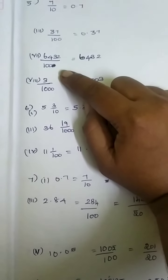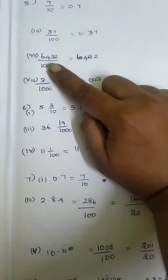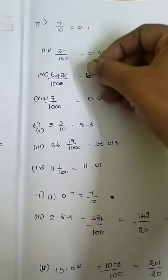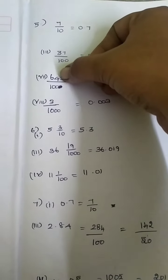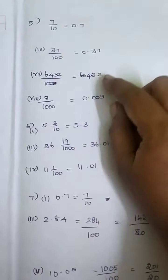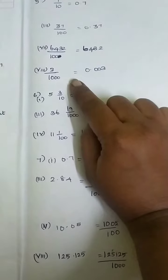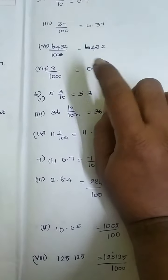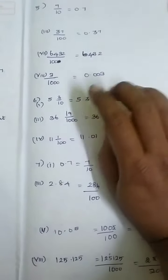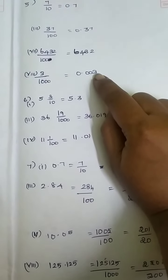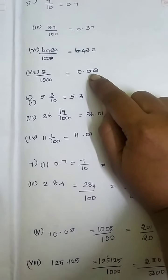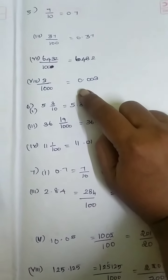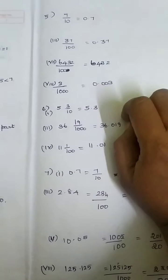6432 divided by 100 — 100 has 2 zeros, so move the numerator 2 digits to the left: 64.32. For 3 by 1000 — 1000 has 3 zeros, so you need 3 digits in the numerator, but you have only 1 digit. So include 2 zeros to make it a 3-digit number, then place the decimal point: 0.003.